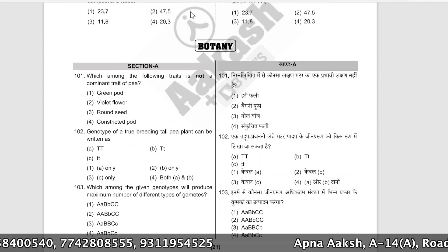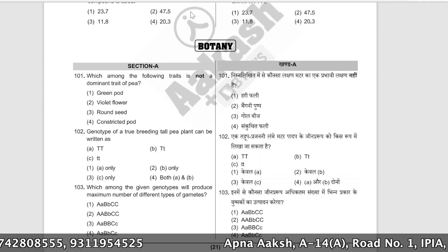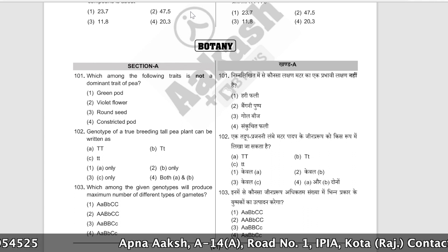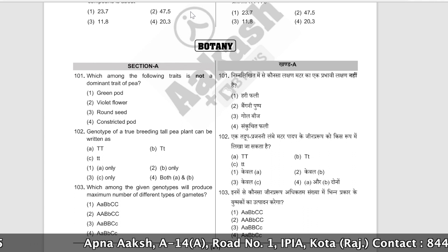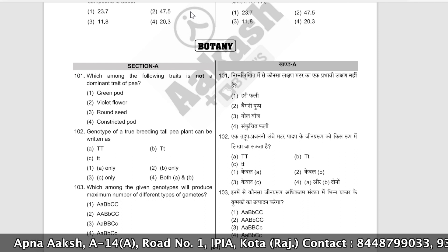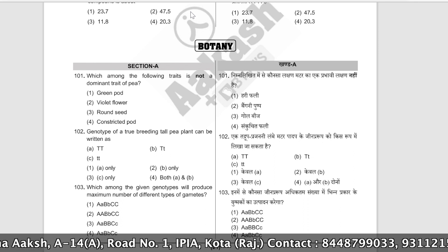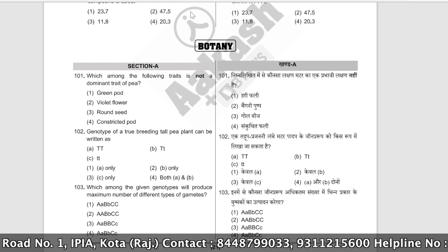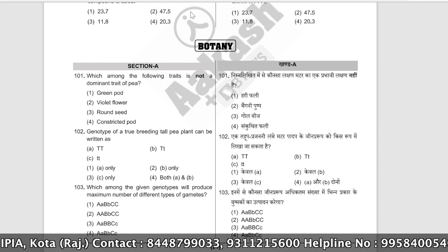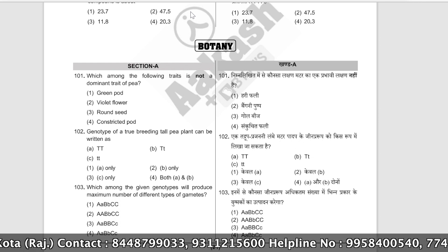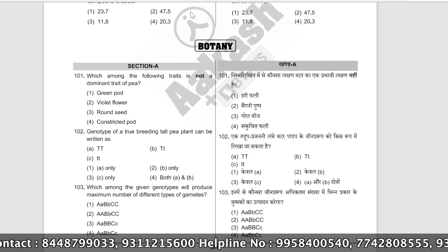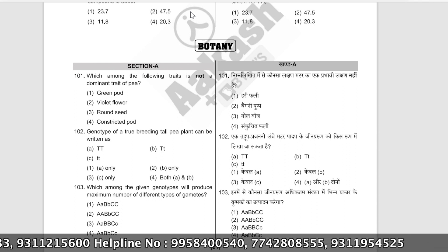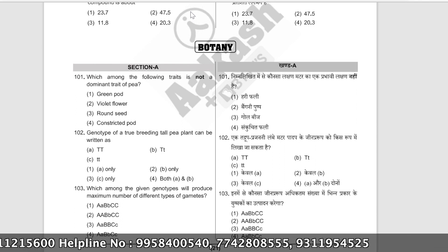Which among the following traits is not a dominant trait? Three are dominant, only one is not dominant — it is recessive. That was 'constricted pod' (sankuchit fali). Constricted pod is not a dominant trait of the pea plant; it is recessive. So the correct answer is that option.